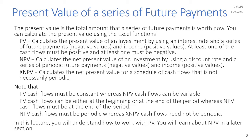Note that PV cash flows must be constant whereas NPV cash flows can be variable. PV cash flows can occur at the beginning or end of the period, whereas NPV cash flows must be at the end. NPV cash flows must be periodic whereas XNPV cash flows need not be periodic. In this video you will understand how to work with PV; NPV will be covered in a later section.